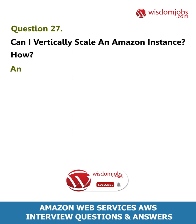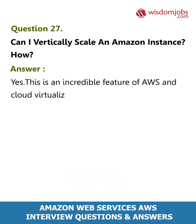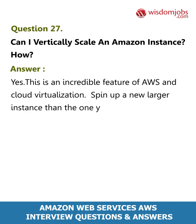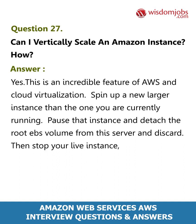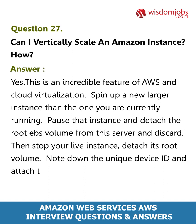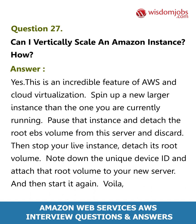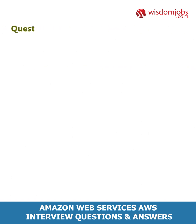Question 27: Can I vertically scale an Amazon instance? How? Answer: Yes — this is an incredible feature of AWS and cloud virtualization. Spin up a new larger instance than the one you are currently running. Pause that instance and detach the root EBS volume from this server, then stop your live instance, detach its root volume, note down the unique device ID, and attach that root volume to your new server and start it again. You have now scaled vertically in place.